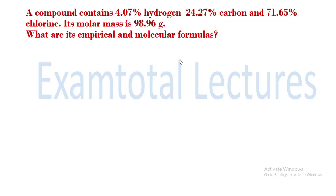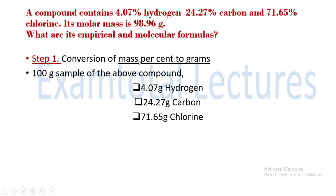Let's take a problem. A compound has 4.07% hydrogen, 24.27% carbon, and 71.65% chlorine. The molar mass is 98.96 grams. We have to find its empirical and molecular formula. Step 1: convert mass percent to grams. Taking a 100-gram sample, we get 4.07 grams hydrogen, 24.27 grams carbon, and 71.65 grams chlorine.